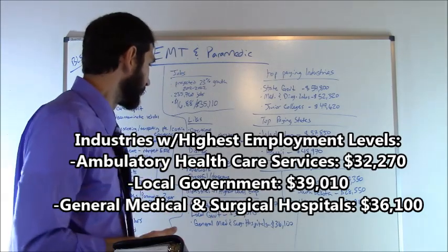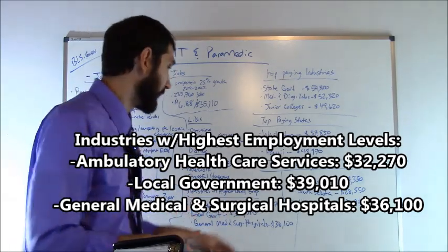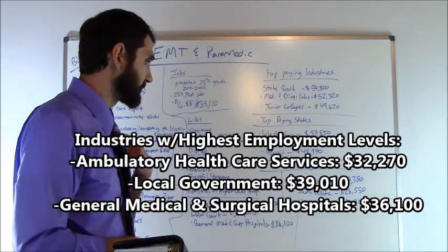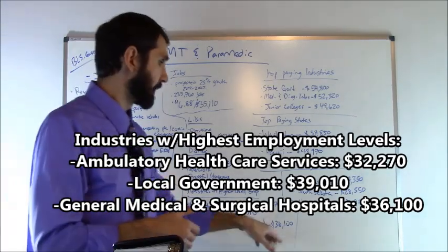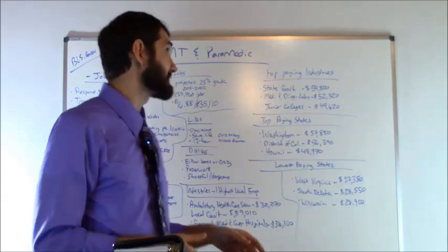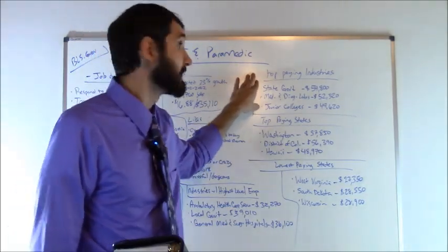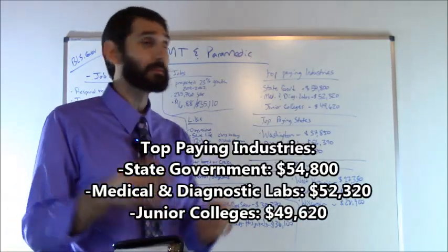General medical and surgical hospitals came in at number three at $36,100 average. What about the top paying industries for this profession? State governments came in at number one, the average there was $54,800.